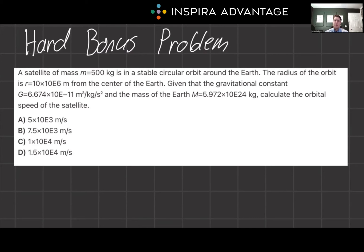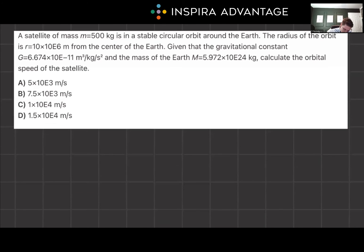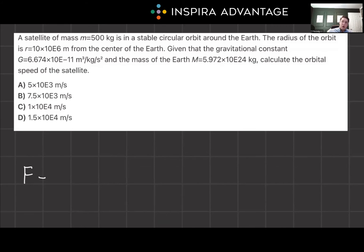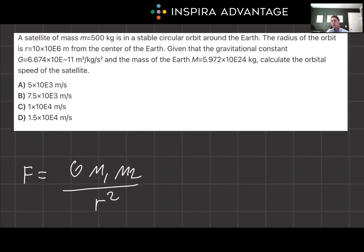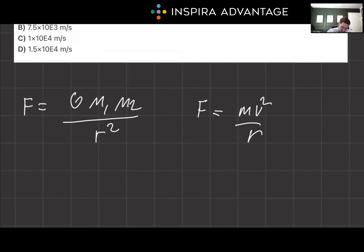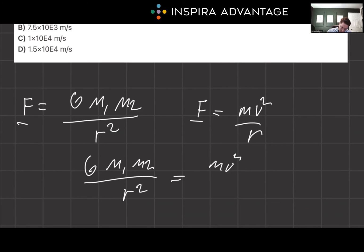Let's walk through it. Start by writing out our equations. The gravitational force equals G times M1 times M2 all over R squared. We know the gravitational force is acting as the centripetal force, so we also write out centripetal force: Mv squared over R. We know they're equal to each other, so we set them equal: G·M1·M2 / R² = Mv² / R.